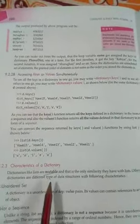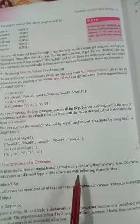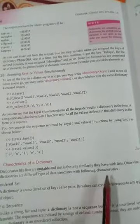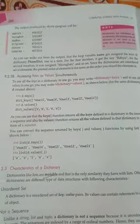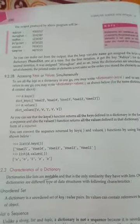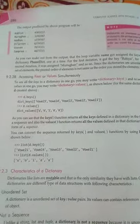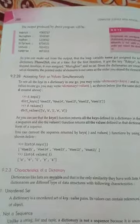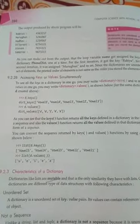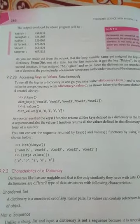Dictionaries, like lists, are mutable, and that is the only similarity they have with lists. Otherwise, dictionaries are a different type of data structure. That is the one difference between the dictionary and list — they are mutable, meaning we can change the value of a dictionary like a list, but otherwise there are lots of other characteristics.